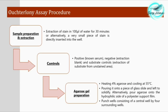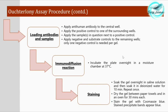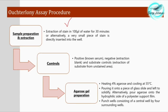For the Ouchterlony procedure, extract the stain sample in 100 microlitres of water for 30 minutes, or directly place the stain in the well. Positive and negative controls are taken. To prepare the agarose gel, heat 4% agarose and cool to 55°C, then pour onto a glass slide, polyester support film, or petri dish and allow to solidify.